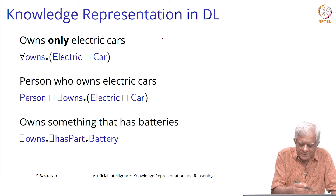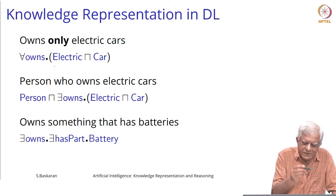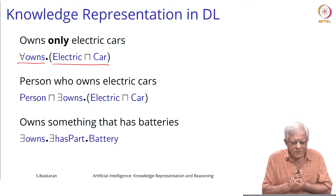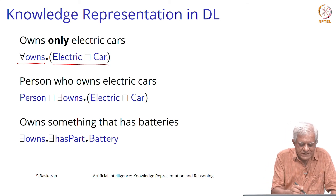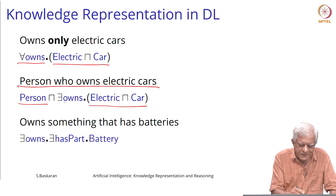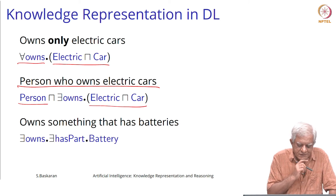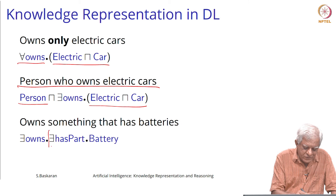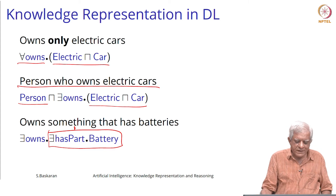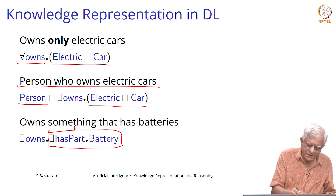If you want to say the set of people who own only electric cars, we can use the 'for all owns' and specify the class from which whatever they own comes from. If you want to say a person who owns electric cars — meaning at least one electric car — the person must be a person and there must be at least one electric car that the person owns. Someone who owns something that has a battery: that something corresponds to a concept here, something that has a battery, meaning it has a part which is a battery.